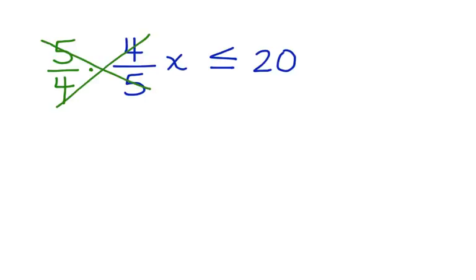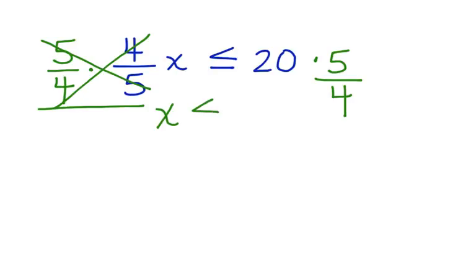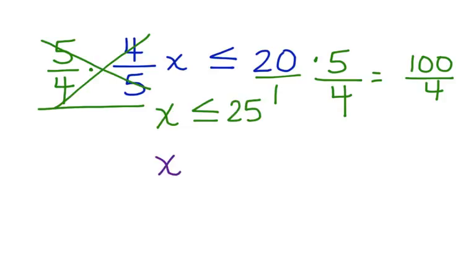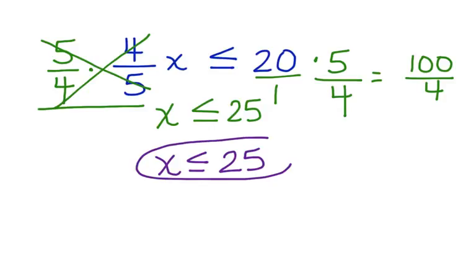The 5's cancel, the 4's cancel, and I can bring down the x. Now since I did this on the left side, I'm going to have to do it on the right side too. So I'm going to multiply 20 times 5 over 4. I'll put 20 over 1, and when I multiply I have 100 over 4. 4 goes into 100 twenty-five times. So x is less than or equal to 25. If I substitute a value into this inequality that is less than or equal to 25, it will make the inequality a true statement.